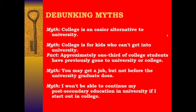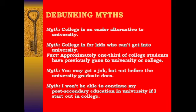Myths: College is an easier alternative to university — it's not. College isn't easier; it's a different alternative, a different experience. College tends to be more hands-on, and many programs have co-ops or internships. Colleges are for kids who can't get into university — also not true. In fact, approximately one third of college students have previously gone to university or college. Kids often graduate from university and then go on to a college program because many college programs are connected to business and have opportunities linked through co-op. My own daughter graduated from university and then did a one-year program at college — and from that program, she got an amazing job.